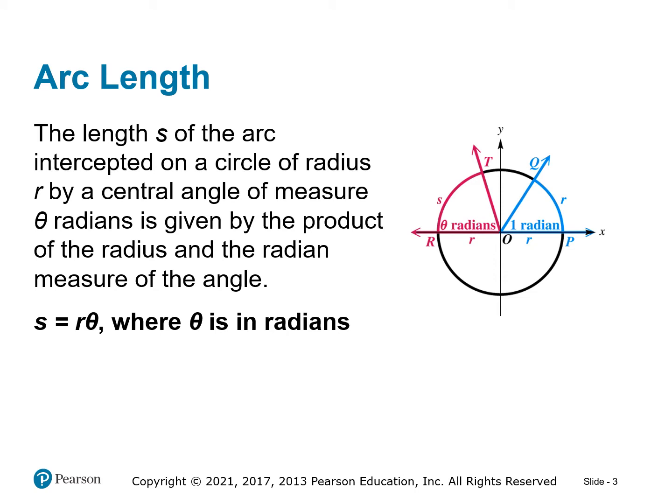The arc length is the length along the edge of the circle intercepted on a circle of radius r by a central angle of measure theta radians. It's given by the product of the radius and the measure of the angle: arc length equals radius times theta, where theta is in radians.